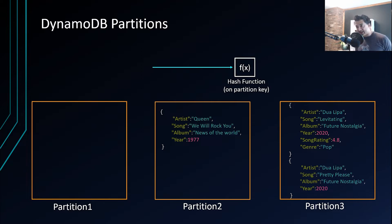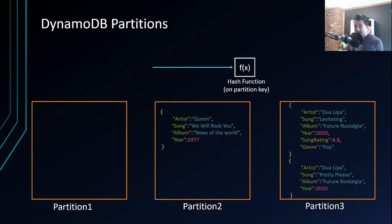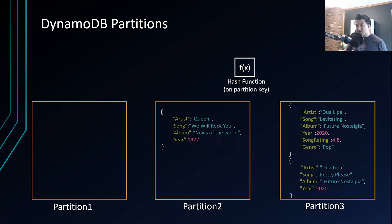The sort key is also called 'range key' because for the partition key you must use an equals operator — you can't query artist greater than or less than a value. However, for the sort key you can use greater than, less than, between, or begins with. For example: give me items where the partition key is 'Queen' but the sort key (song) begins with 'We Will'. That's why it's called a range key.